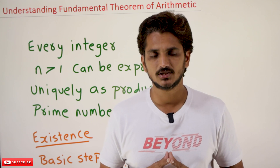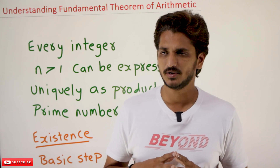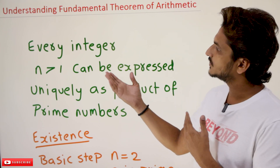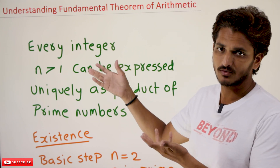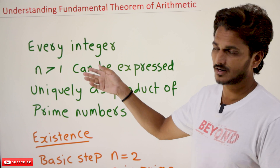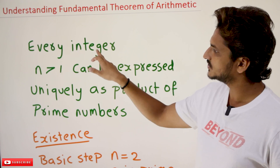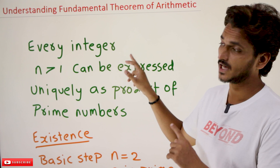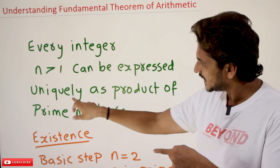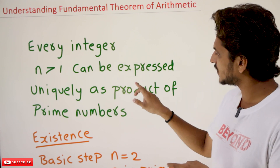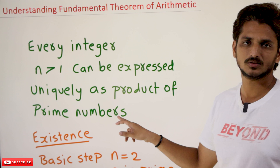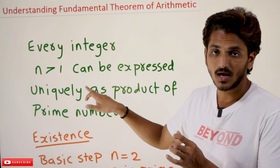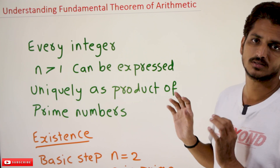The link for the playlist is provided in the description below. Coming to today's class — in our last class, when we discussed prime factorization, this is the statement: every integer n greater than 1 can be expressed uniquely as a product of prime numbers. The key point to understand is that word: uniquely as a product of prime numbers.